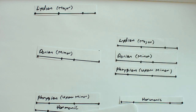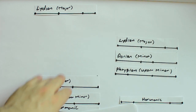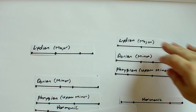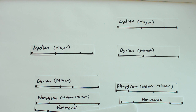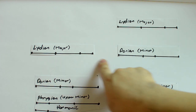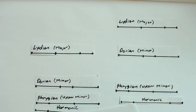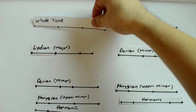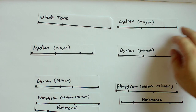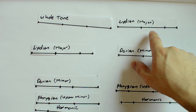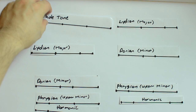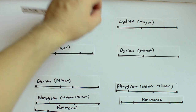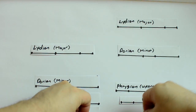The Mixolydian mode is a Lydian bottom and a Dorian top, and the name literally means 'mixed Lydian.' Unfortunately, the Lydian mode is actually a whole tone scale on the bottom and a Lydian tetrachord on top. So it's too bad that the Lydian mode isn't actually made up of two Lydian tetrachords — it's the Ionian mode that's made up of two Lydian tetrachords.